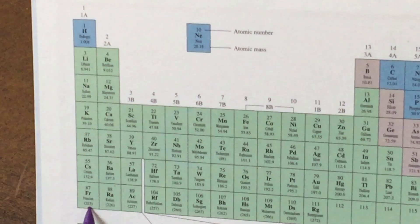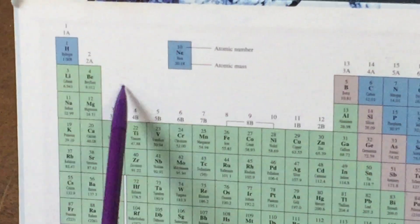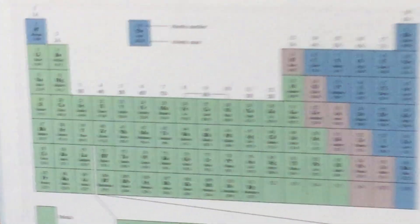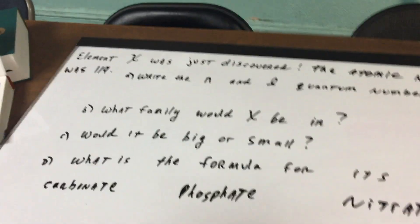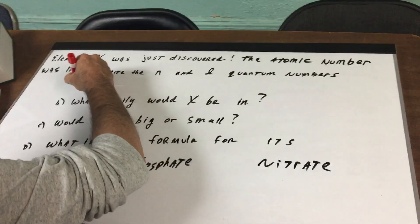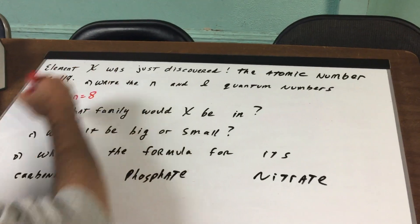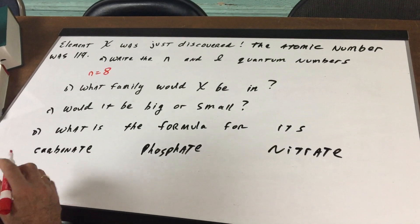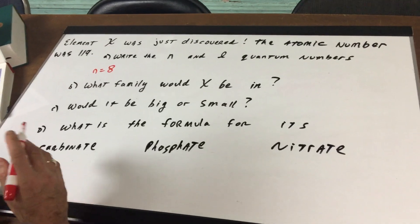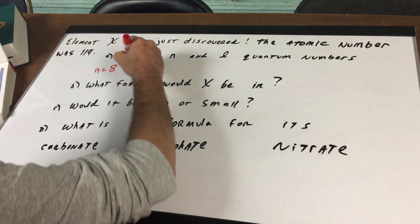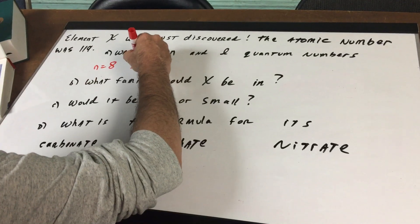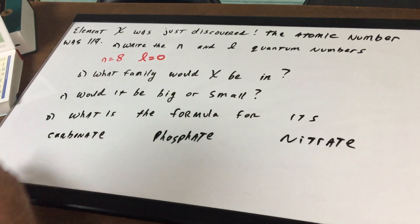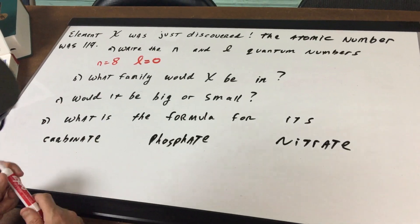francium in this family and if you go across 1, 2, 3, 4, 5, 6, 7, it would be in the 8th period. All right now that we know it would be in the 8th period, n would be equal to 8 because it would be in the 8th principle energy level. Anything in group 1 ends in an S1. So that means that the L quantum number would be zero because it has an S orbital electron as the valence electron.